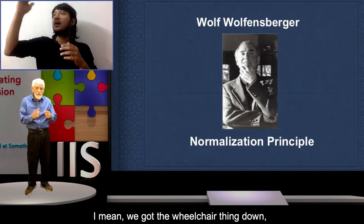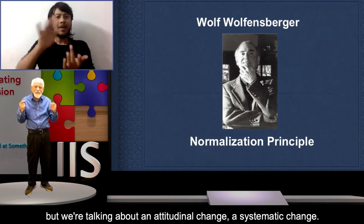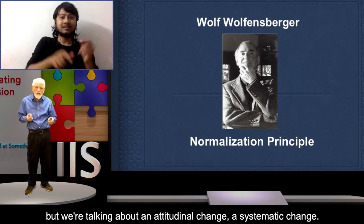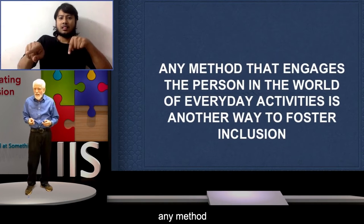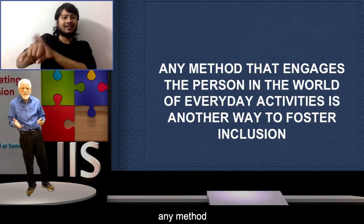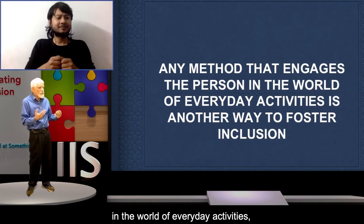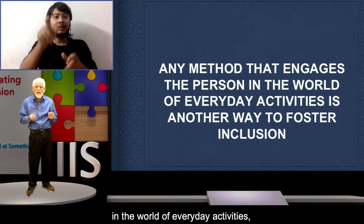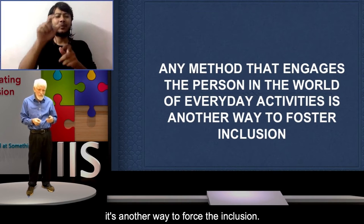We should have aisle seats for people who can't bend a leg — we've got the wheelchair thing down. But we're talking about an attitudinal change, a systematic change. Any method that engages the person in the world of everyday activities is another way to foster inclusion.